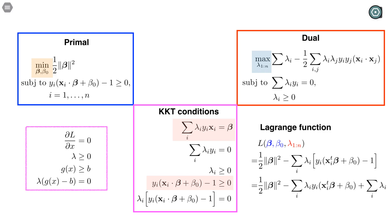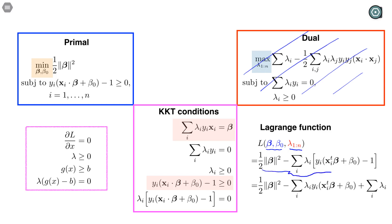Now let's look at how we write the KKT conditions for our problem. Here we ignore the dual problem and focus on the primal problem, and define the Lagrangian function. The Lagrangian has two sets of arguments: the first set is the primal arguments — the slope beta and intercept beta 0 — and the second set is the Lagrangian multipliers lambda 1 through lambda n, because we have n inequality constraints. The Lagrangian is defined to be the objective function minus lambda times the constraint, and after reorganizing we get this expression.